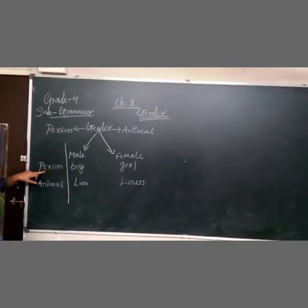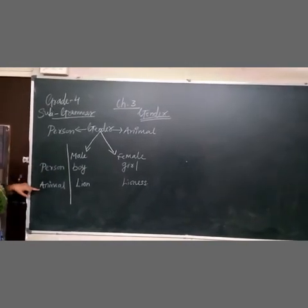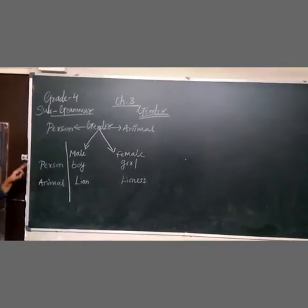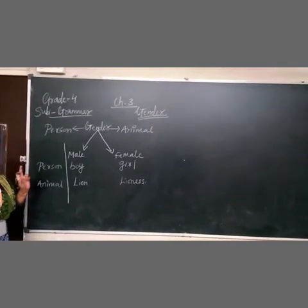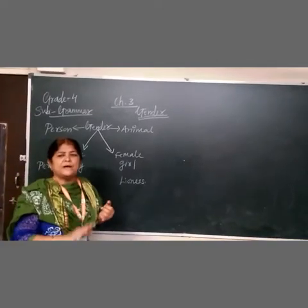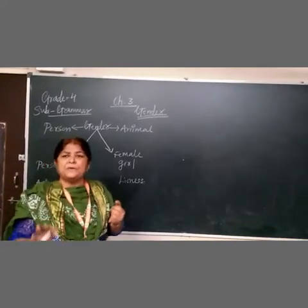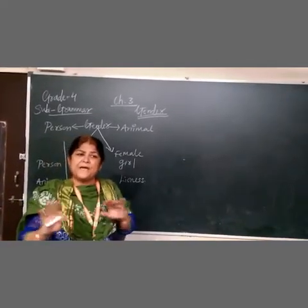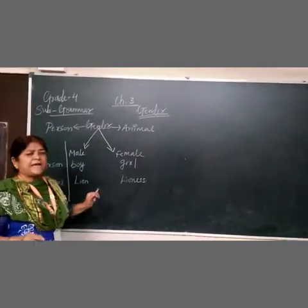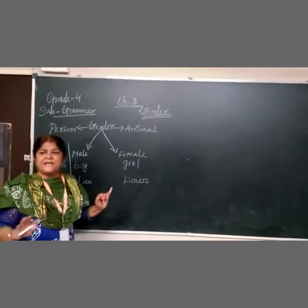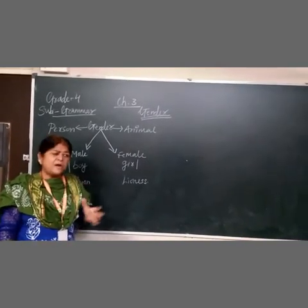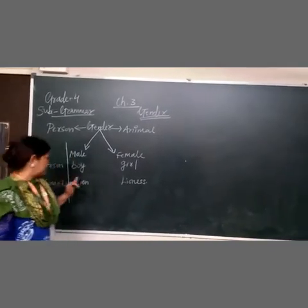Here is person and animal. A person is who is boy, girl, uncle, auntie — we are all persons. Animals include dog, tiger, elephant — they are all animals.